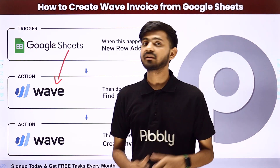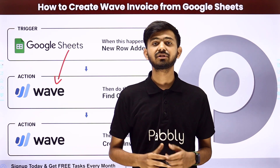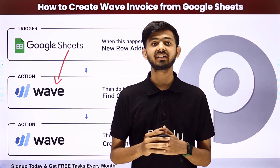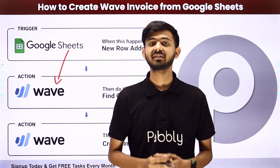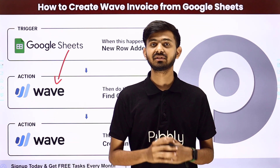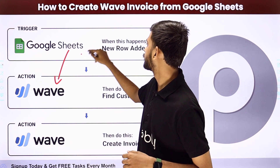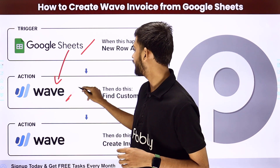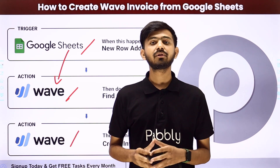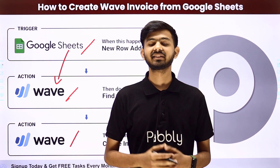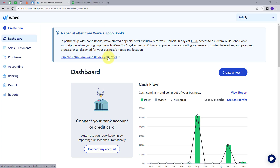For this we will create an integration between Google Sheets and Wave. We are going to use Pably Connect, which is an amazing software for automation and integration. In Pably Connect we are going to use trigger and action. In the trigger application we will use Google Sheets, and in the action application we will use Wave.